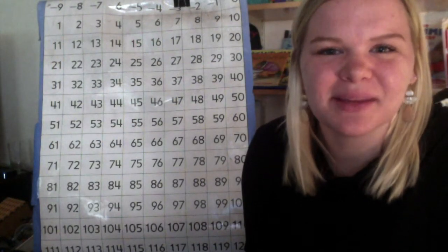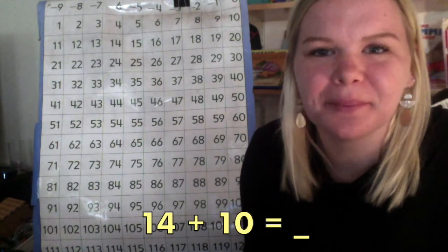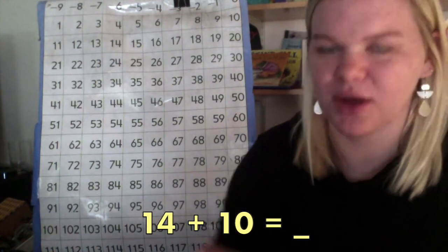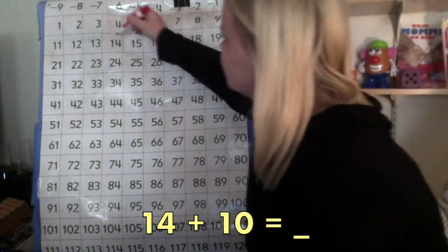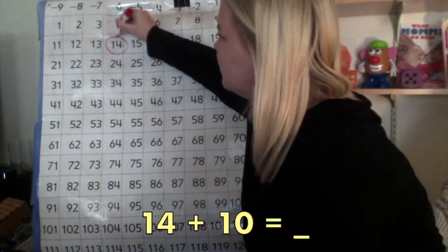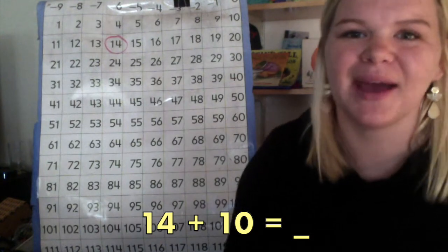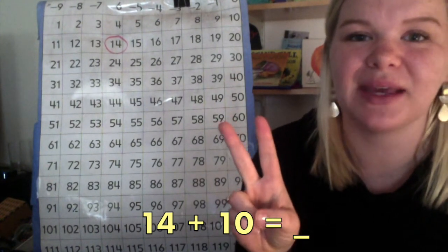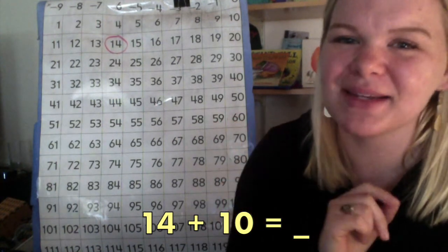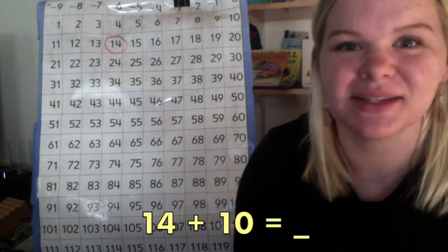Our next number sentence is 14 plus 10. So, we begin on the number 14, which is right here, and we count up 10. Now, there are two ways that we can do this. One might take a little bit longer, and the other is like a shortcut.